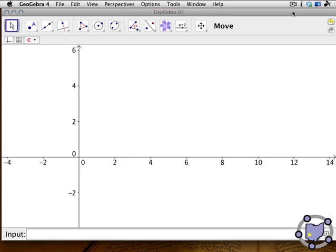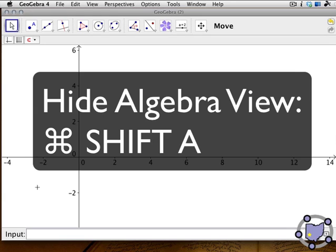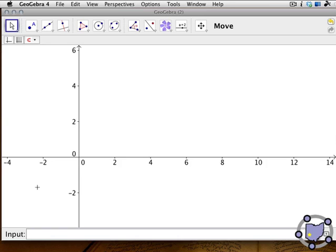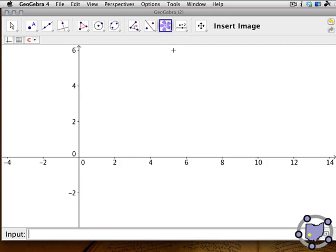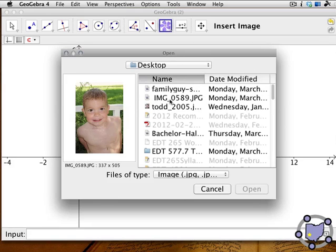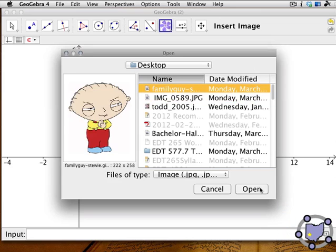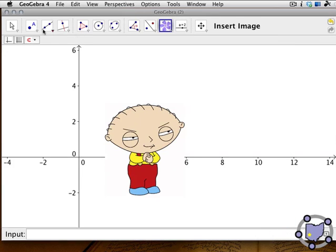To begin, we're going to insert a new image. You'll notice that I've hid the algebra view - you can toggle that by hitting Ctrl+Shift+A on a PC or Command+Shift+A on a Mac. We're going to insert an image. I'm going to pick Stewie again. Once you've selected this tool, you need to click to define where the bottom left corner of the image will be. This is my son - we'll use him a little bit later.